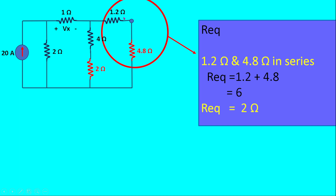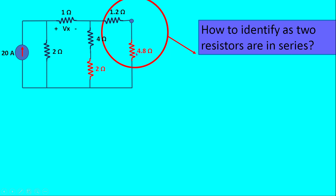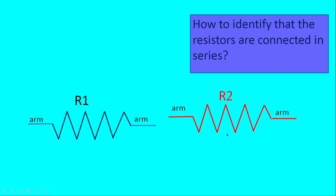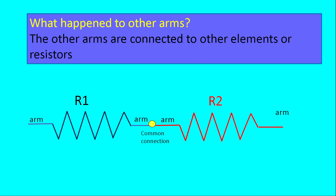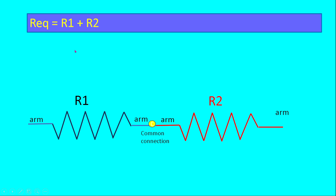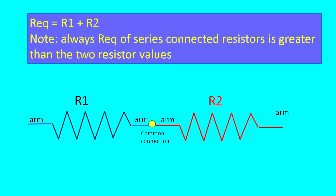Now consider two resistances connected in series. How do you identify series resistances? If R1 and R2 are connected with only one common connection between them — one terminal of R1 connects to one terminal of R2, while the other terminals are each connected to different elements elsewhere in the circuit — then they are in series. The equivalent resistance for series-connected resistors is R1 plus R2, and this R equivalent is always greater than either individual resistor value.